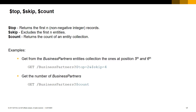$top, $skip, and $count are typically used to work with pagination, but other cases can require their individual usage. $top returns the first N non-negative integer records; $skip excludes the first N entities; $count returns the count of an existing collection. In the first example, the response will only include the business partner entities at positions 5 and 6 in the results collection, as we ask for only 2 entities using $top=2 and skip the first 4 using $skip=4.